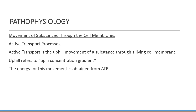Active transport processes are basically uphill movement of a substance in a living cell — up a concentration gradient, against the concentration gradient. The energy for that movement is obtained through ATP. Active transport moves substances against the concentration gradient toward the side of higher concentration. It's similar to a car rolling down a hill without requiring energy, but then needing energy to move back up the hill.